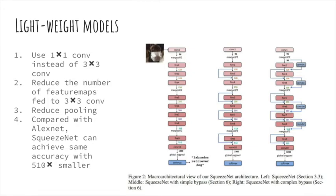There are several features of SqueezeNet. It uses 1x1 conv instead of 3x3 conv, and it reduces the number of feature maps fed to 3x3 conv. It reduces the pooling so that the information won't get lost too soon. And compared with AlexNet, SqueezeNet can achieve same accuracy, but with 50 times smaller. This is a very satisfying achievement for mobile device application.